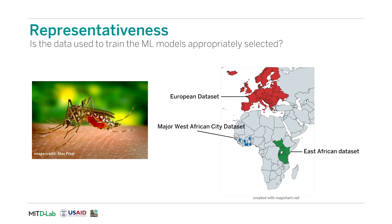The second criterion is representativeness. Is the data used to train the machine learning models appropriately selected? The organization should consider if the machine learning model uses data representative to the context in which it will be deployed, and which strategies are important for ensuring models can be trained with appropriate data. As an example, consider a startup medical diagnostics company that is trying to build a remote diagnostic tool for the West African population. High-quality coded datasets from West Africa may not be available, so the startup uses a European dataset to train their models. Some diagnoses may be accurate, but disease differences between Europe and West Africa may cause misdiagnoses for individuals, putting them at health risk.